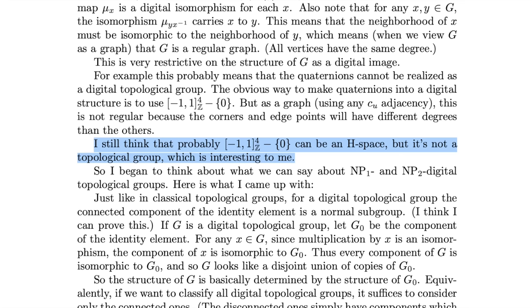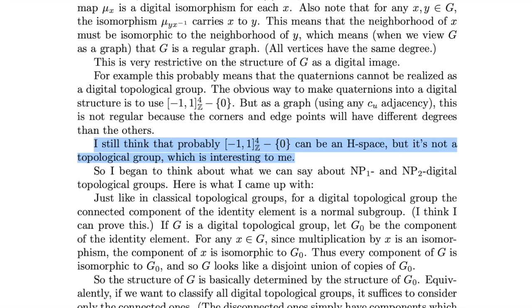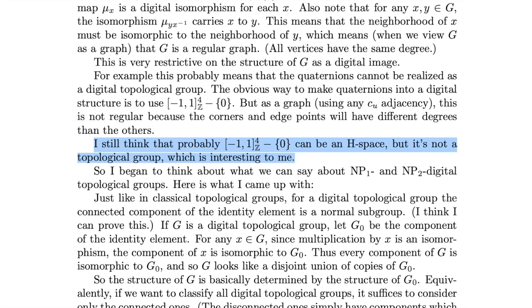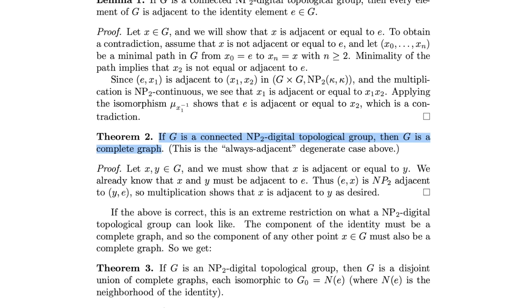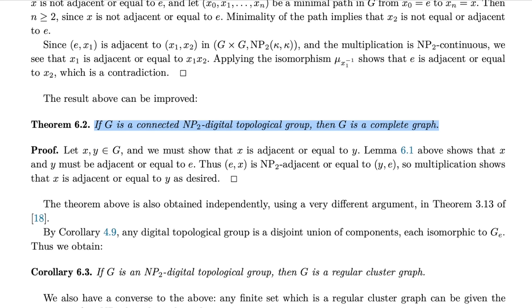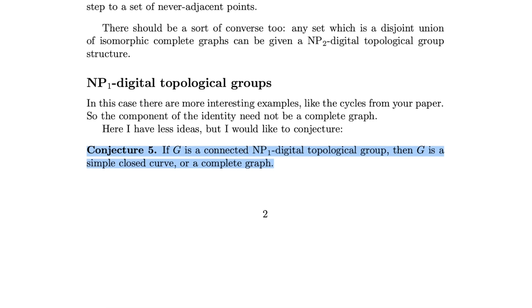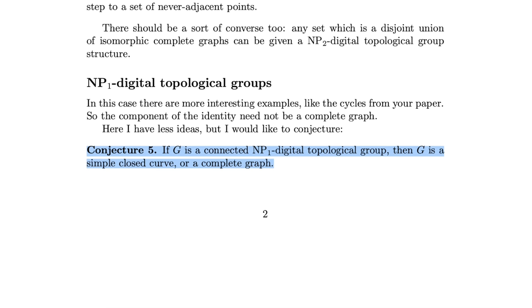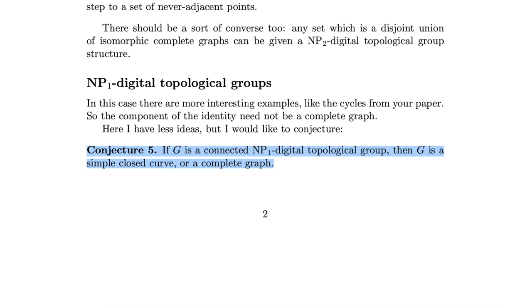This part here ended up in the paper as Corollary 3.9. This stuff here is mostly wrong I think — we're still not sure actually. This bit here ended up becoming Corollary 4.9. This became Theorem 6.2. At the end here I made a conjecture. This ended up being false but it was still interesting enough to discuss it in the paper.